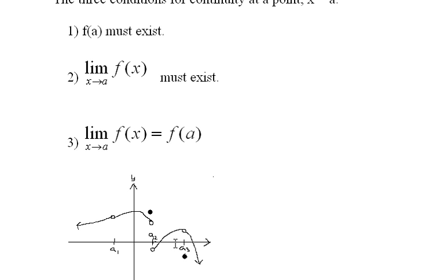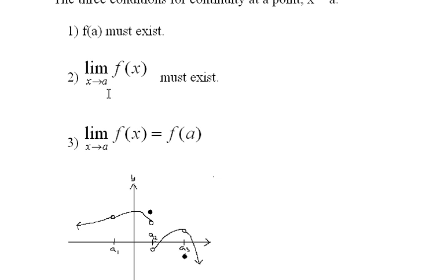Now we kind of roll on over here to a3. And the first condition is met, f of a3 does exist. Here it is. Does the limit of f of x as x approaches a3 exist? I look here. Oh yeah, it does. The limit exists. But does the limit of f of x as it approaches a3 equal f of a3? Sorry, it doesn't because a3 is down here and the limit is up here somewhere. So it doesn't meet this third condition. Therefore, we have a discontinuity at a3.